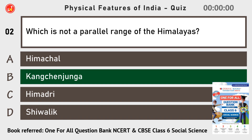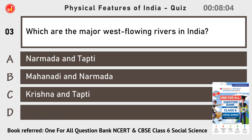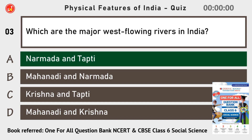Kanjanjanga — which are the major west-flowing rivers in India? Narmada and Tapti.